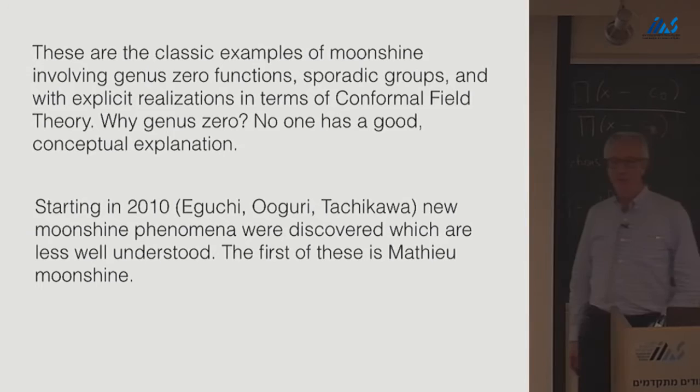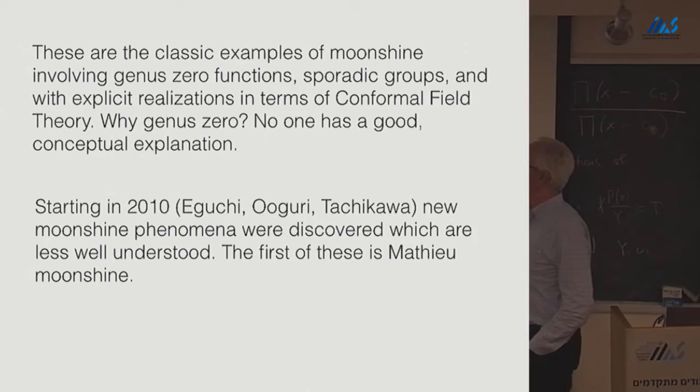And again, it was recently shown by John Duncan and a student, Matt Crane, that the twine partition functions are all genus zero help modules, again. So these are classic examples of moonshine that involve this rigidity due to genus zero functions, sporadic groups, and have explicit realizations in terms of conformal field theory. The biggest mystery is why genus zero.